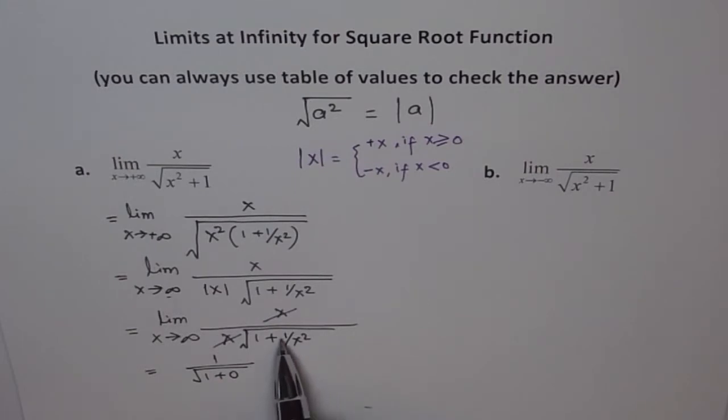So we get square root of 1 plus 0 because if x is very large then this term 1 over x square will be very very small, so we'll say 0. Therefore we get this as 1. Therefore limit of this function when x approaches infinity is plus 1.